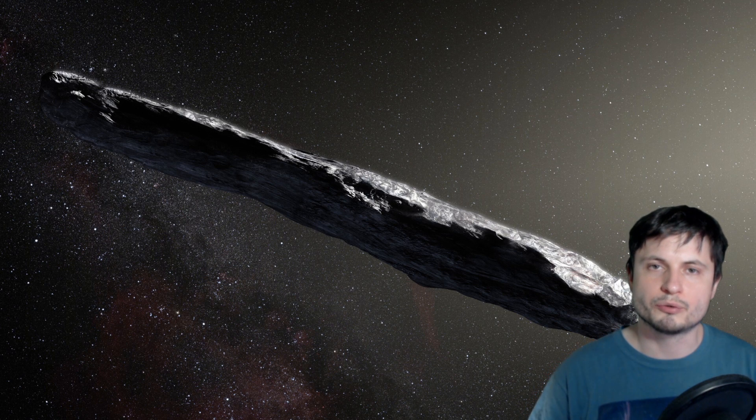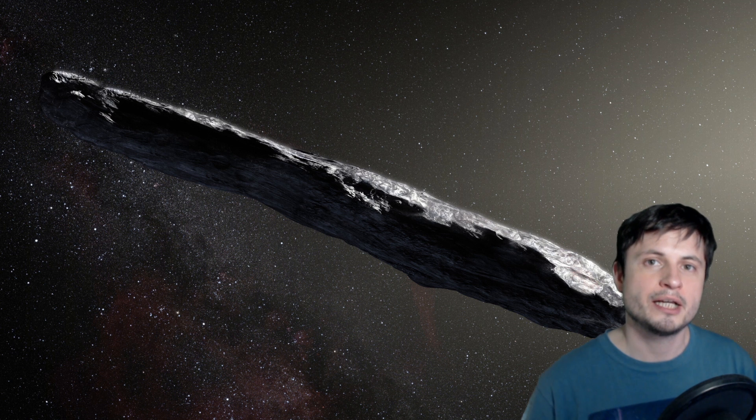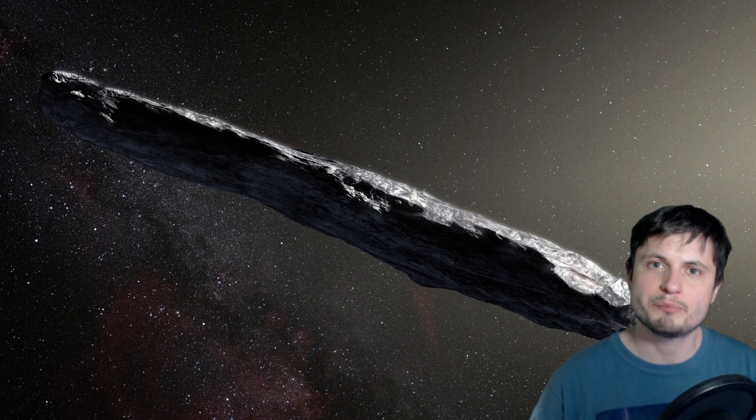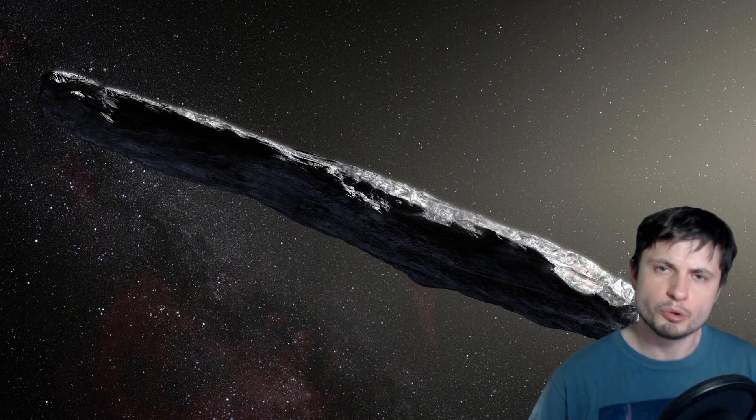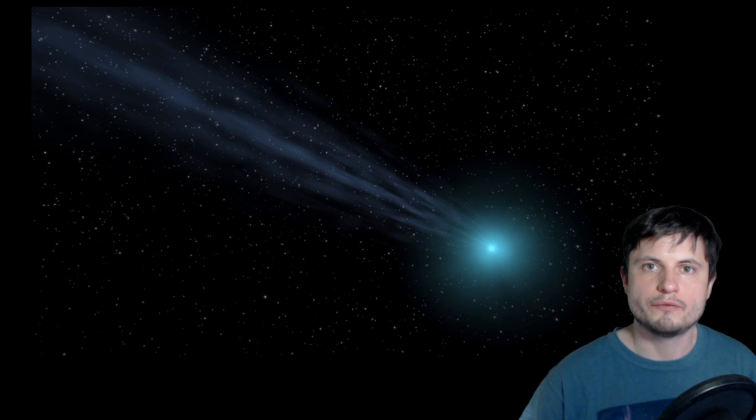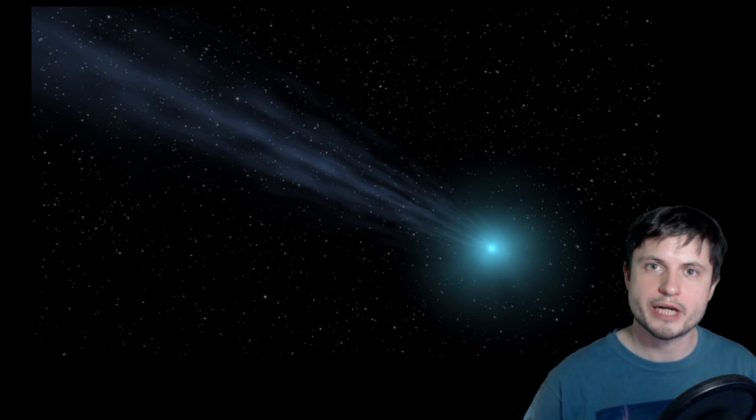So back in October of 2017 the scientists discovered the first ever interstellar comet known as Oumuamua. There were a lot of unusual things about it though. First of all, it seemed to have been changing directions as it passed close to the sun, although most comets usually do that, but this one did not really emit any visible cometary tail that could be a telltale sign of how this comet was able to slowly change its trajectory.